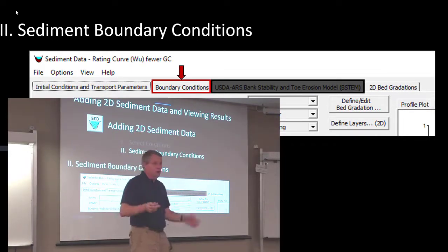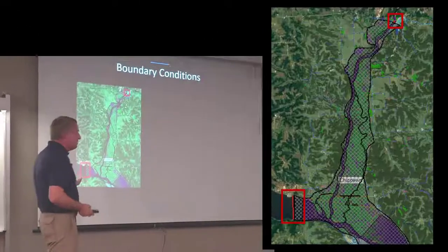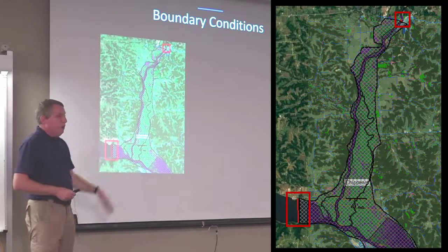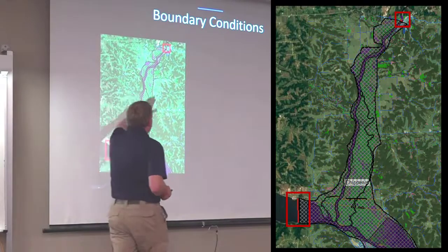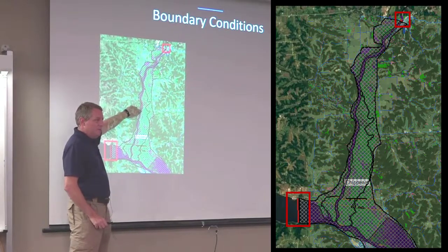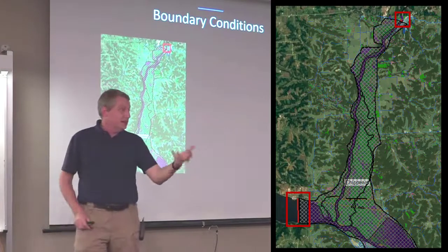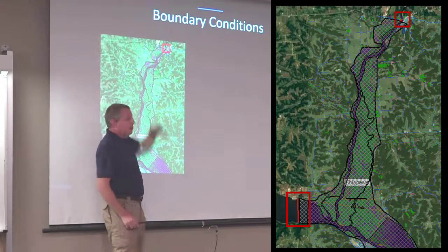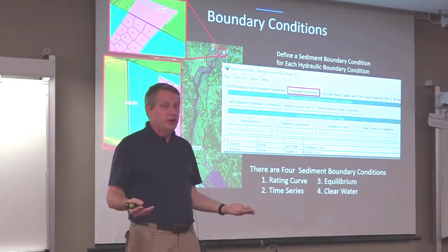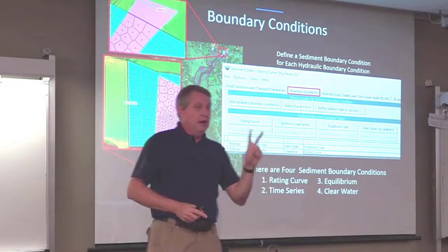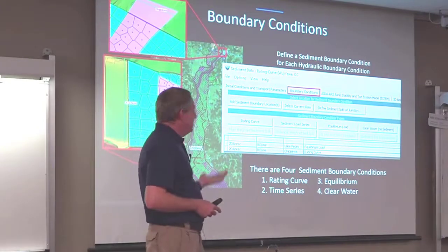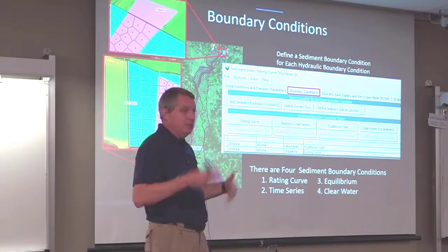You need sediment boundary conditions — sediment flux coming into your model. This is the hardest part. Here's the Chippewa — Alex Nelson's model — and we have two boundary conditions. One is a reservoir, Lake Pepin, so we don't have a lot of sediment coming in. The other is much more complicated. If you select boundary conditions, we look at wherever you have external boundary condition lines in your hydraulic file and automatically populate a sediment boundary condition for each of those. It's really just going to come in anywhere you have a hydraulic boundary condition.